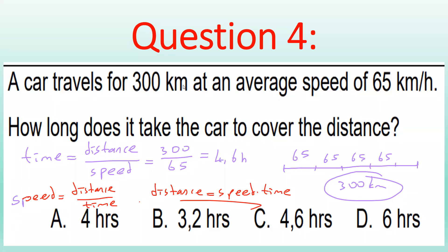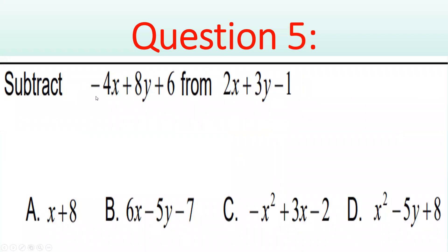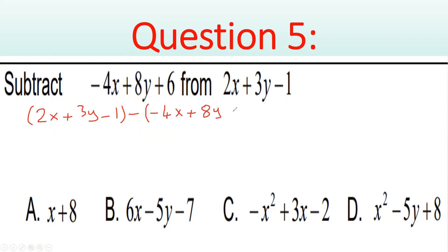We've done question 4. Let's continue with question 5. Subtract (−4x + 8y + 6) from (2x + 3y − 1). What's happening here? You are subtracting from this expression. First, write down the expression we are subtracting from: 2x + 3y − 1. Then, in brackets, place the expression being subtracted, with a minus sign in front: minus (−4x + 8y + 6).